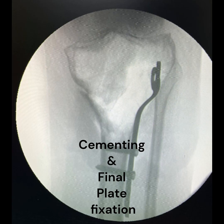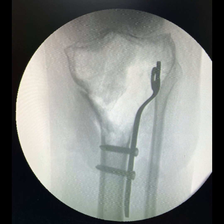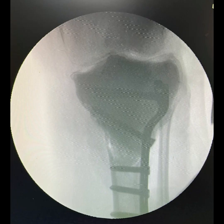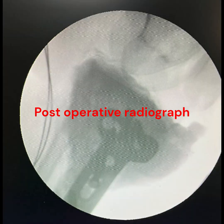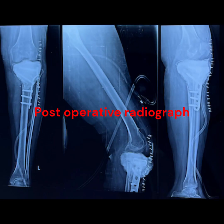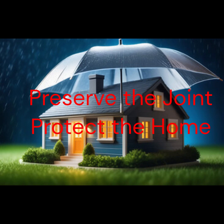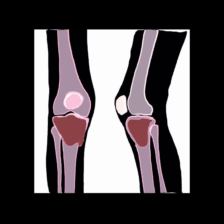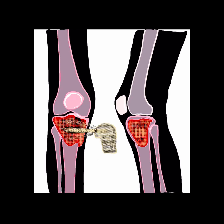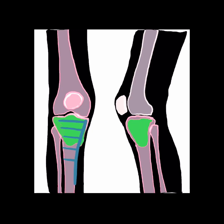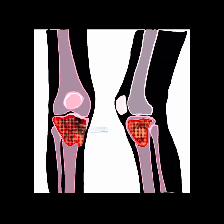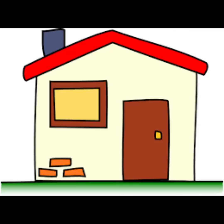This hardware helps in maintaining the alignment and stability of the tibia during the healing process and supports weight-bearing activities. The purpose of surgery is to preserve the patient's own joint, similar to protecting a house from harsh weather. By following these steps, the surgeon removes the tumor, fills the gap left behind, and supports the bone to help it heal properly. This reduces the risk of the tumor coming back and helps the patient recover with a stable and strong tibia. Please consult your doctor to know more about GCT of bone.